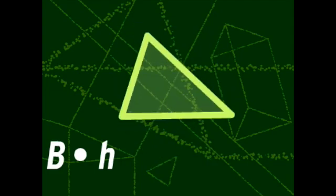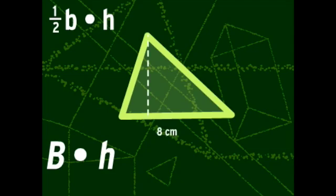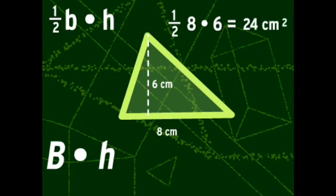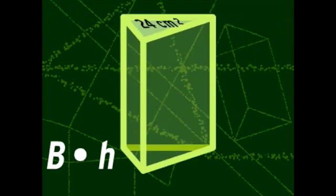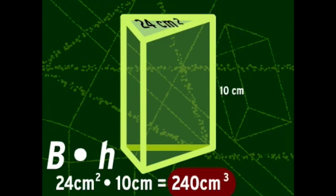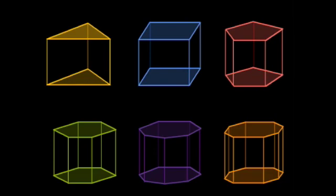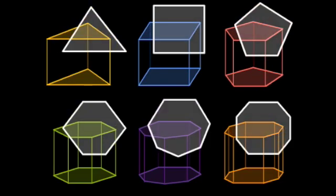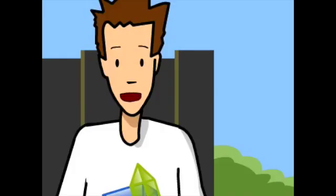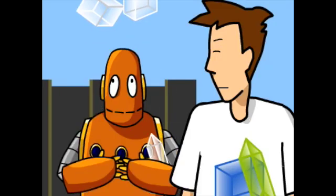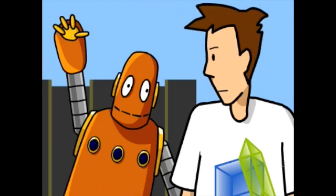The formula for a triangle's area is one half of the base times the height. This triangle has a base of 8 centimeters and a height of 6 centimeters, so one half of the base is 4 centimeters times 6 equals 24 square centimeters. The height of our prism is 10 centimeters, so the area of the base times the height is 240 cubic centimeters. This formula works with prisms of any base shape — just find the area of that base, then multiply by the prism's height.